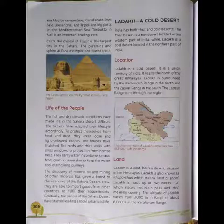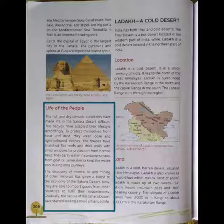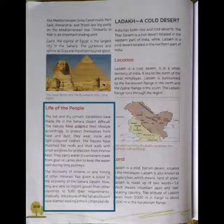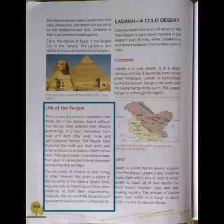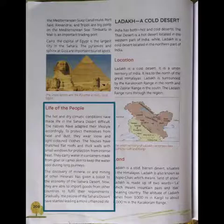The climatic conditions have made life of humans difficult, so natives adopt their lifestyles accordingly. People living there wear loose and light-coloured clothes to protect themselves from heat and dust. For protection from intense heat, houses have thatched flat roofs and thick walls with small windows. Water containers are made from goat and camel skin to keep water cool. The economy here is boosted by mineral oil and mining. People import goods from other countries to fulfil their requirements, and gradually the people of Sahara have started leading a more urbanized life.